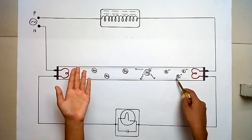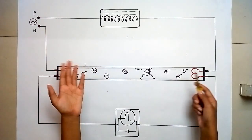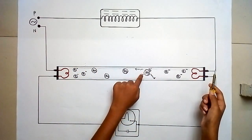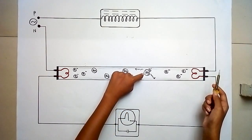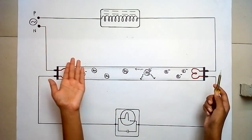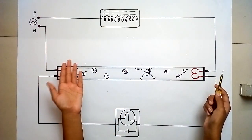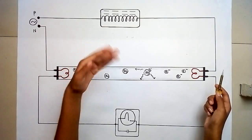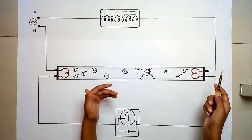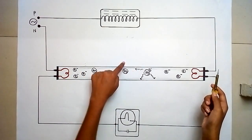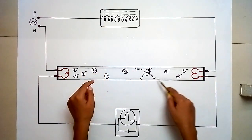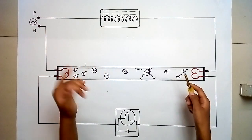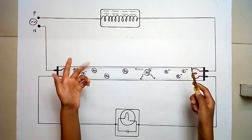These electrons are also known as thermions. These thermions strike the mercury vapour atoms and excite them to higher energy levels, and when these electrons come back to the lower energy levels, they release energy in the form of photons which fall in the ultraviolet region.